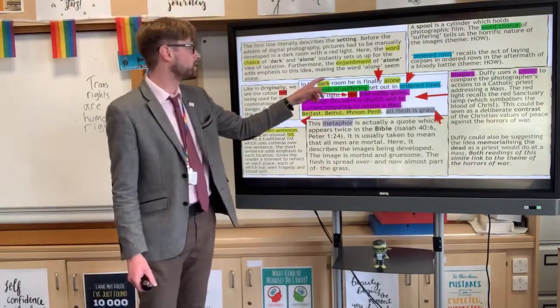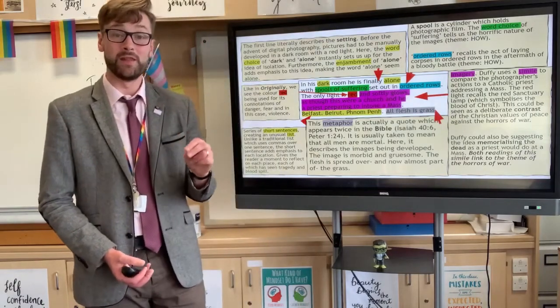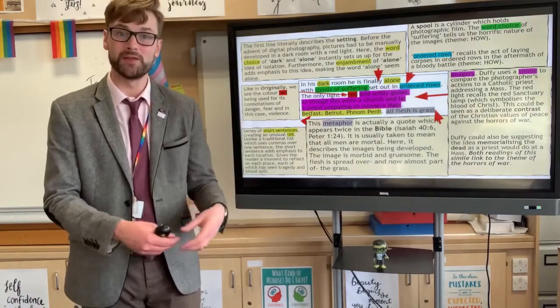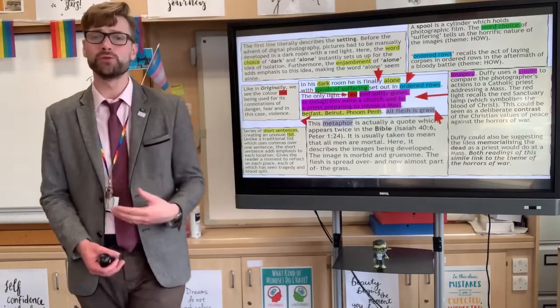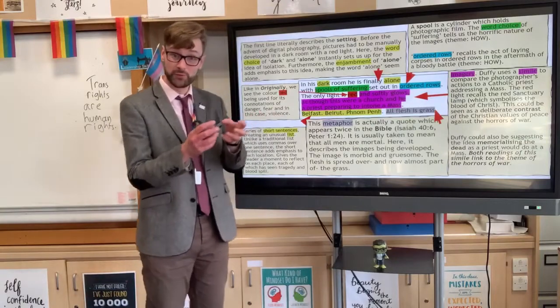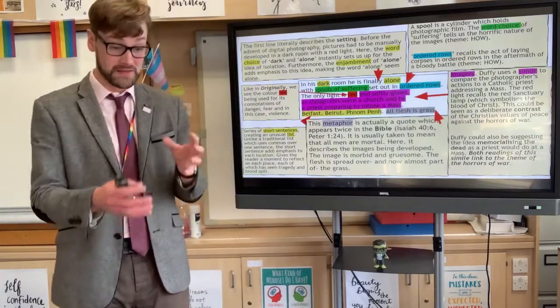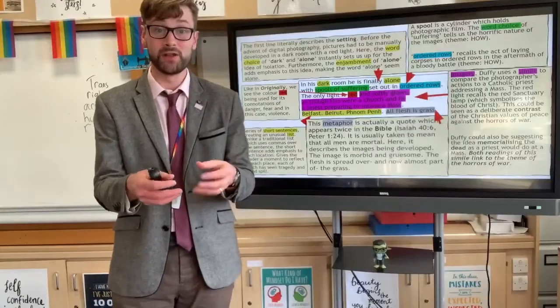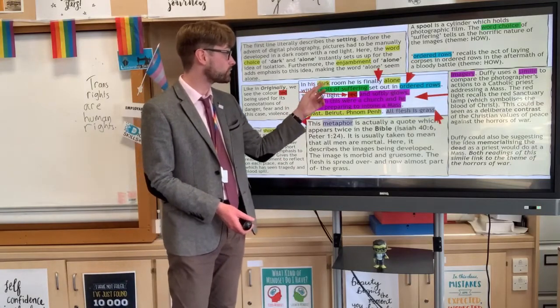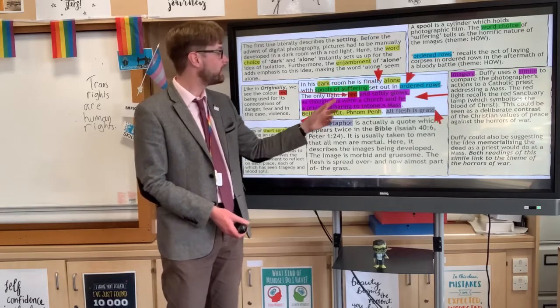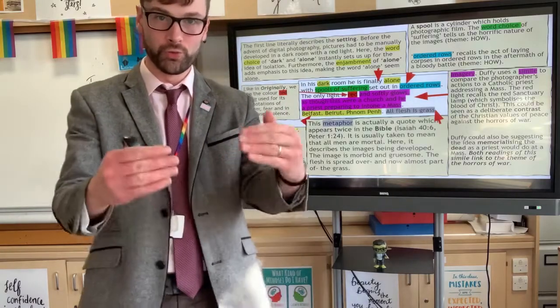Enjambment is when the poet's sentence continues over multiple lines. And it's always interesting to see which word is left on its own halfway through a sentence. And in this case, it is the word alone, which is made to in itself feel alone. We can also read metaphorically the word dark. It's not just the room which is dark physically and visually, but in a metaphorical sense, there's maybe a clue here that this is quite sinister, that perhaps what he's developing is something quite negative. I want to then highlight this use of the phrase ordered rows. So we talk about the spools of suffering being laid out in ordered rows.